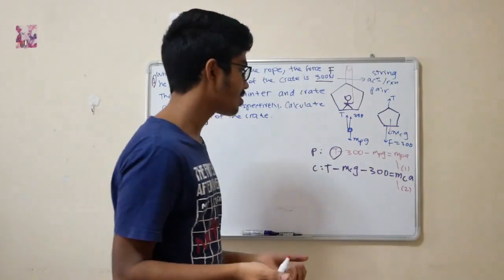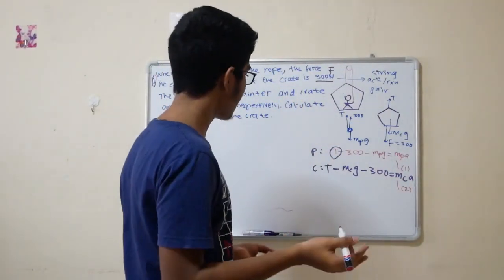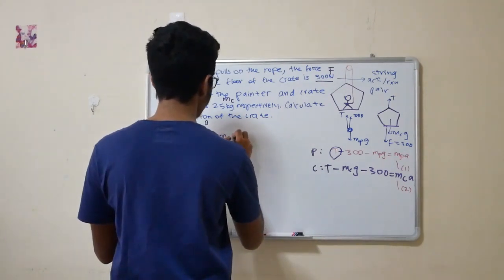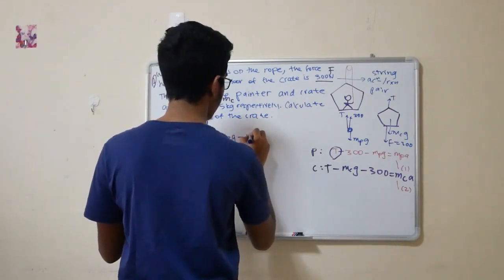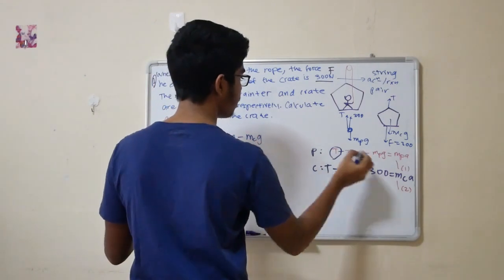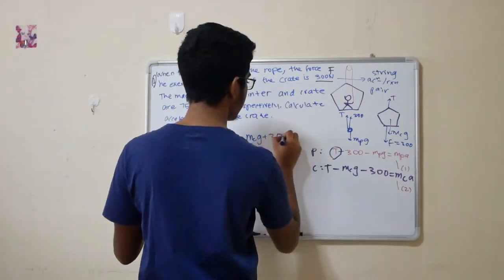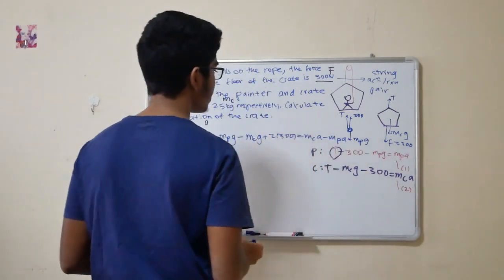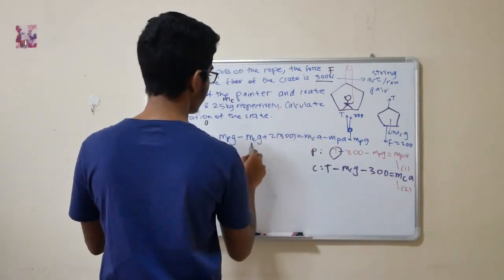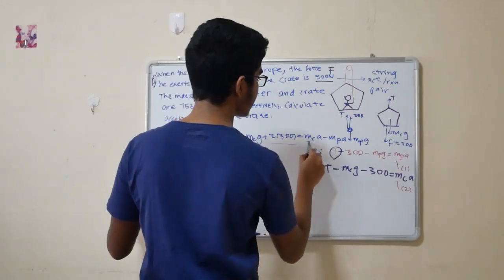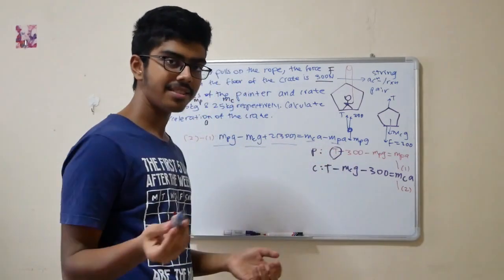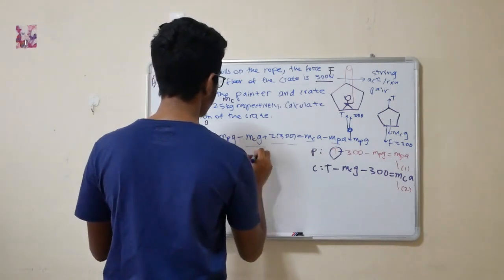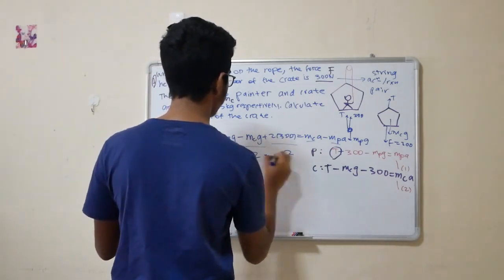Can you cancel out the tensional force? If you guys take 2 minus 1, you guys will get m_p g minus m_c g plus 2,300 equals m_c a minus m_p a. You guys know this, this, this. You guys know this and this. Can you calculate the acceleration? Easy, simple math. And the answer you'll get is 2.2 meters per second square.